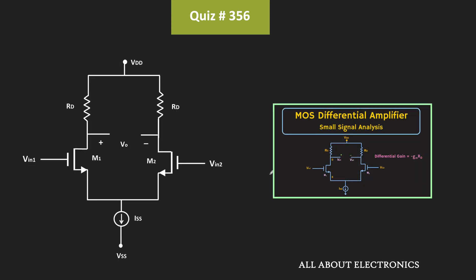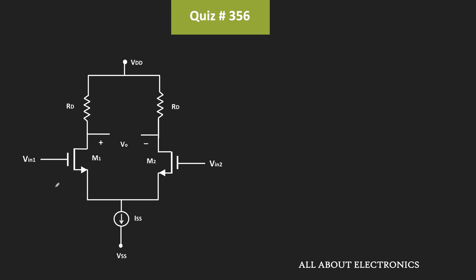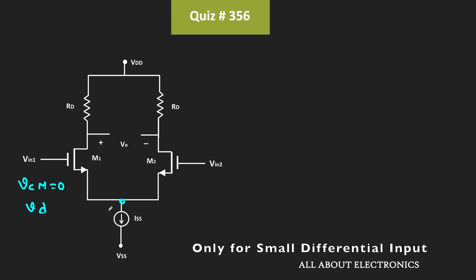If you have followed the recent video on the main channel, we have seen that using the small signal analysis, we can easily find the differential gain of this amplifier. We know that the input to this differential amplifier consists of two components: the common mode component and the differential component. For the small signal analysis, this common mode component will act as zero. Moreover, we will consider all the DC sources in the circuit as zero, while this current source will also act as an open circuit, and this node over here will act as a virtual ground. That means since the circuit is symmetrical, this node will act as a virtual ground.